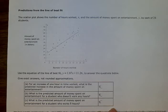Predictions from the line of best fit. The scatter plot shows the number of hours worked, x, and the amount of money spent on entertainment, y, by each of the 24 students.